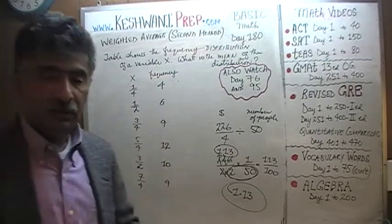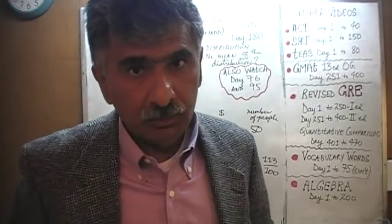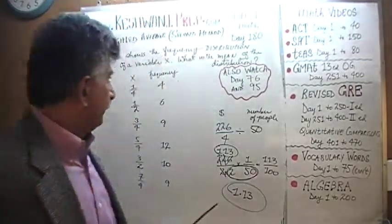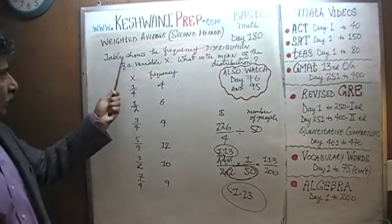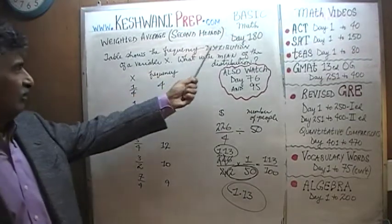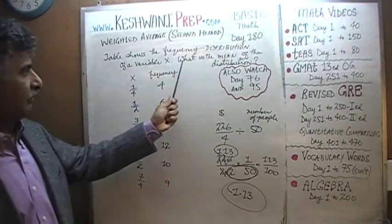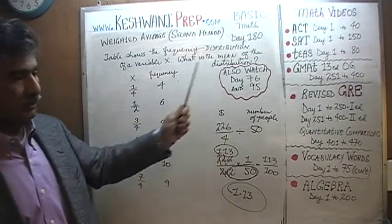The problem, as you can see, is already on the blackboard. Let's go take a look at it. It says: the table below shows the frequency distribution of a variable x. The question is, what is the mean of the distribution?